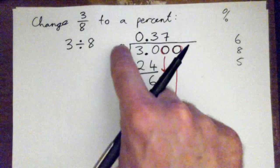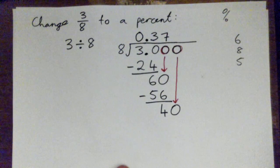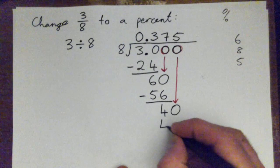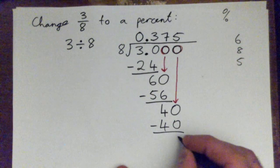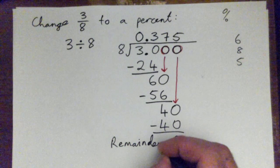So now we have eight into forty. All right, lovely. Five times eight, forty. Subtract remainder zero. So remainder is zero. We're done.